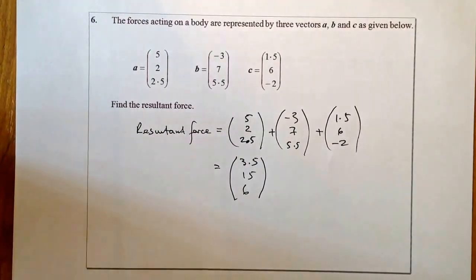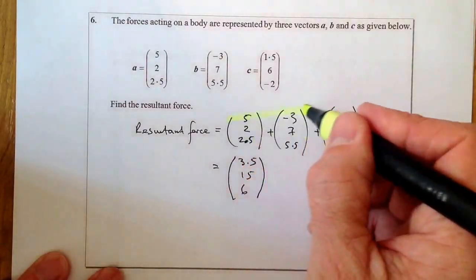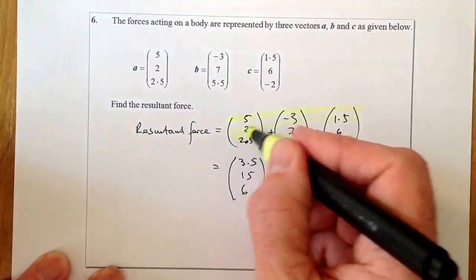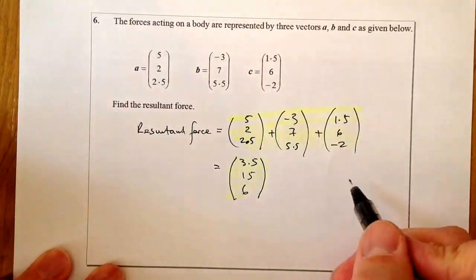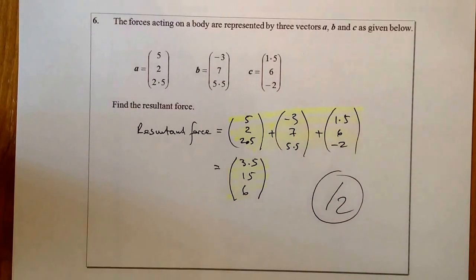This question here is out of two marks. So one mark for getting the addition here, knowing to do the addition, one mark for the answer. So I've got two marks for this vectors question here.